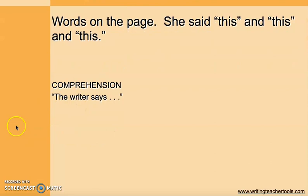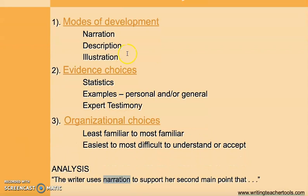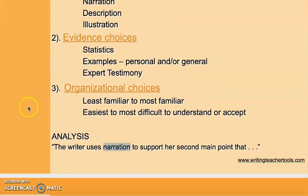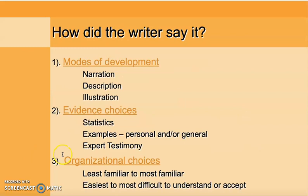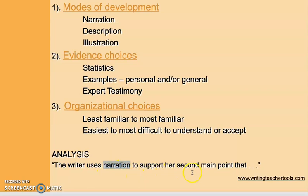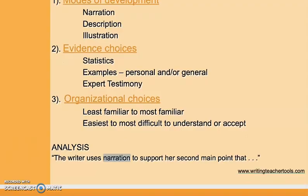The next one is the analysis part — picking out the modes of development, thinking about evidence, organization, and all the other things discussed earlier. When doing analysis, sentences might read something like 'the writer uses narration to support her second main point.' What you're seeing is that narration isn't just there because the writer wanted to tell a story, but that it's in service of supporting some other idea. That's the really important idea with analysis — understanding why choices are being made and how they're developing the piece.